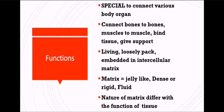Now, the functions of connective tissue: the word 'connective' itself suggests connection. Its function is to connect various body organs — bone to bone, muscle to muscle — and to bind tissues. The main function is to provide support. It is living, loosely packed, and embedded in an intercellular matrix. Intercellular matrix means between two cells there is a fluid called matrix, which can be jelly-like, dense, rigid, or fluid depending on the organ.